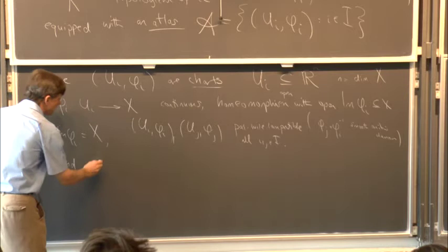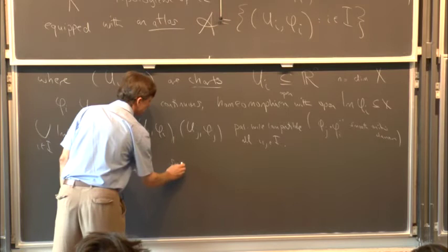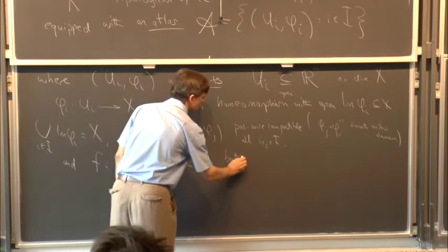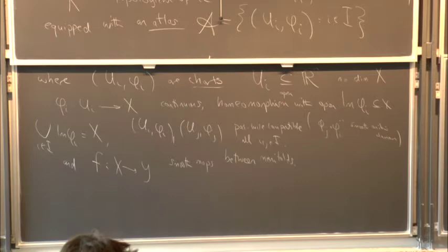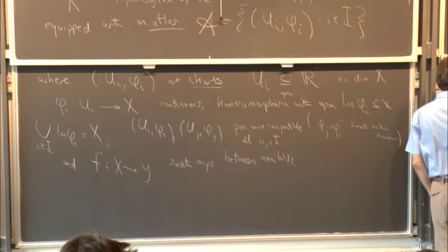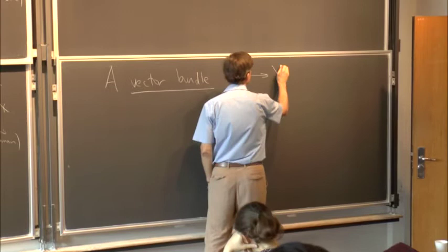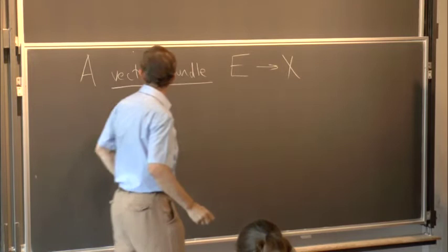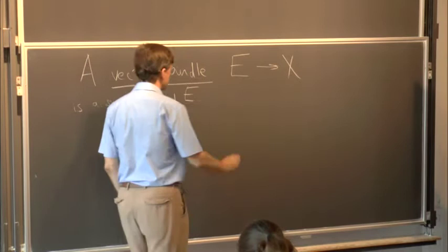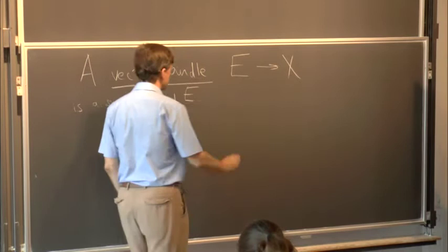We'll also be talking about smooth maps f going from X into Y — smooth maps between manifolds. Next let's talk about vector bundles. A vector bundle E over X — where X is our base manifold — is a smooth manifold E of rank k, where k is a natural number representing the dimension of the fibres.